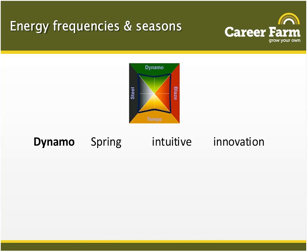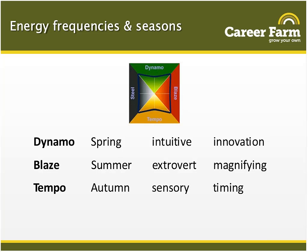The dynamo energy relates to spring — dynamo people are very intuitive and very creative, and they make their money through innovation. The blaze people on the right, the summer energy, are warm and friendly, extroverts who like to be together in groups — they make their money by making things bigger. The tempo energy, the autumn energy, is much more sensory — it's about being aware of what's going on and what's the right time for something, and they make their money generally by responding to messages. Traders in particular will come across buying and selling at the right moment.